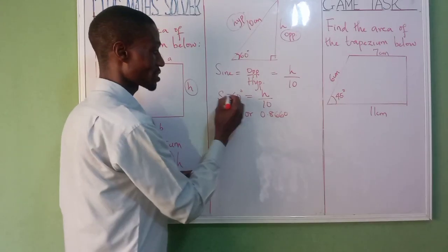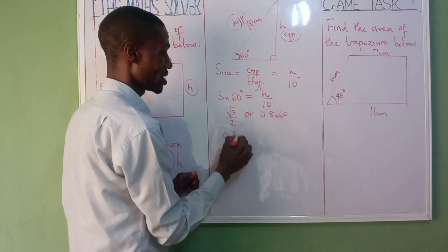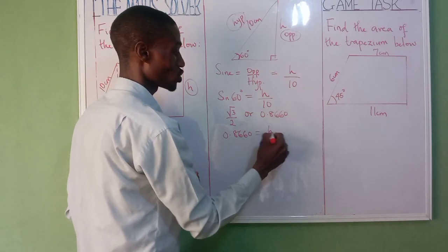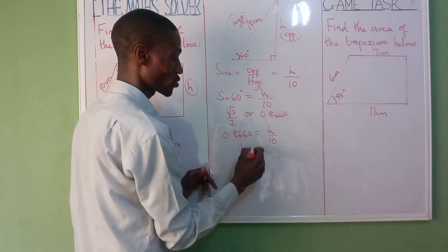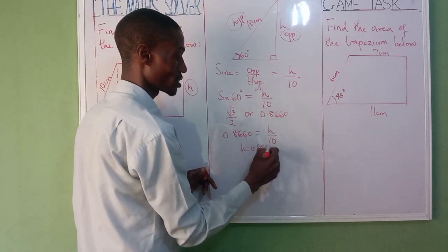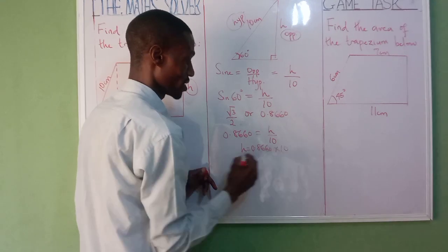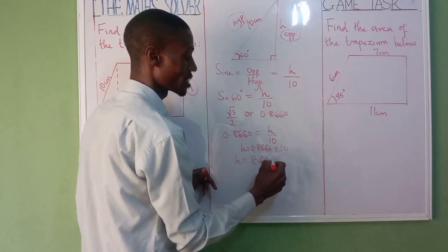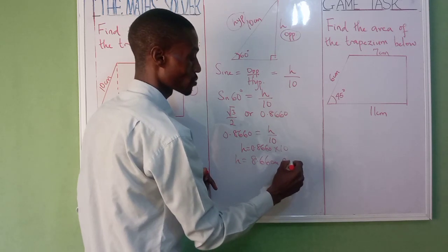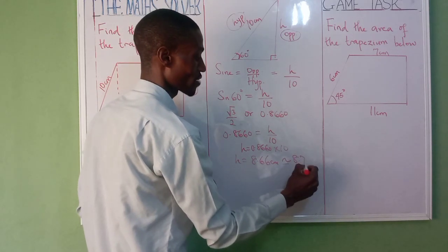Let's now put it here. Sine 60 is 0.8660 equal to h over 10. Cross multiply, so our h equal to 0.8660 times 10. h equal to 8.66 centimeter, approximately. Let's make it 8.7 centimeter.